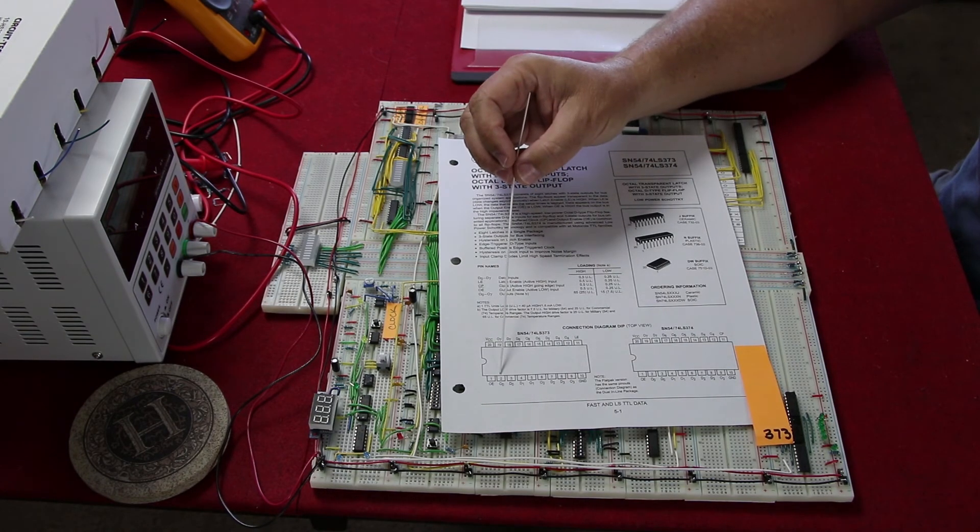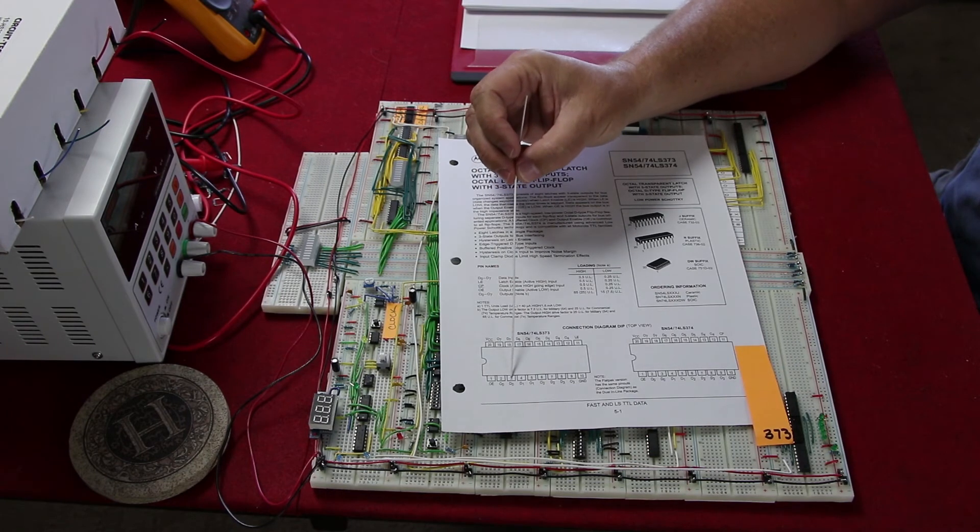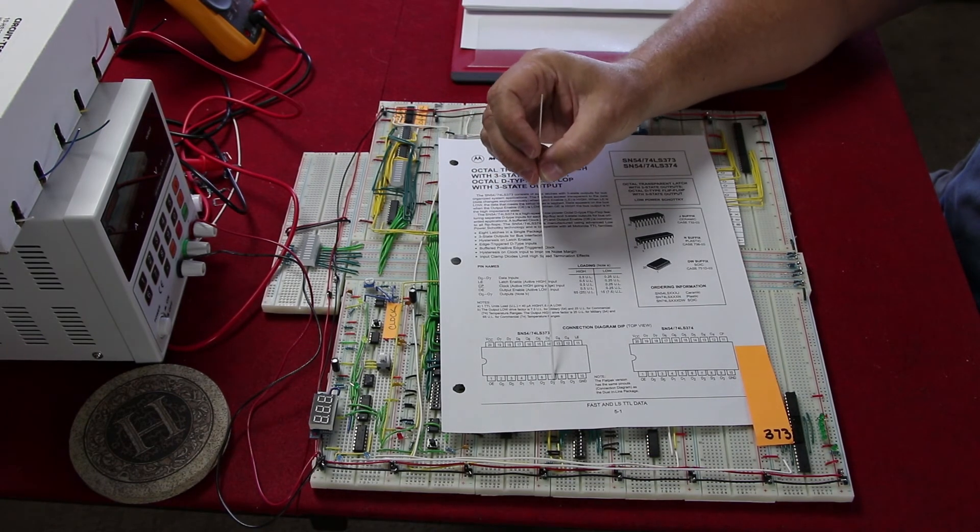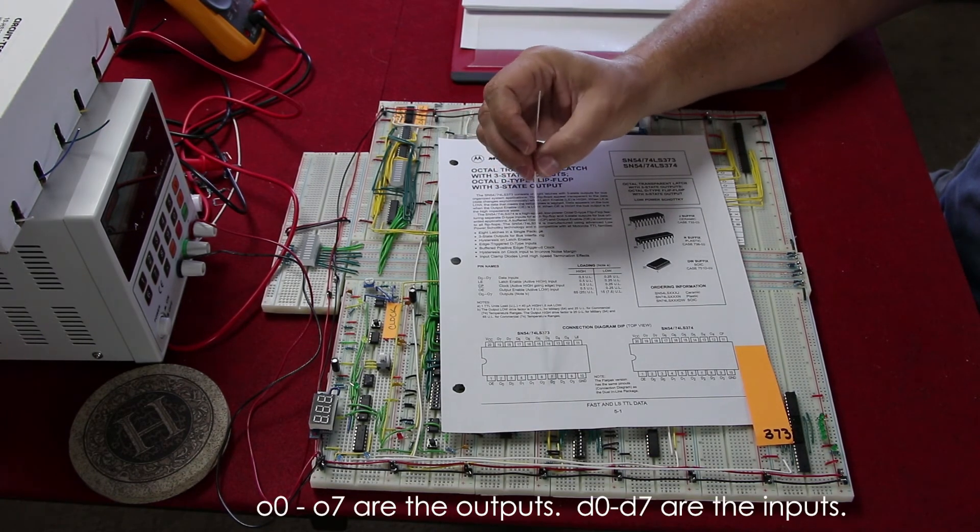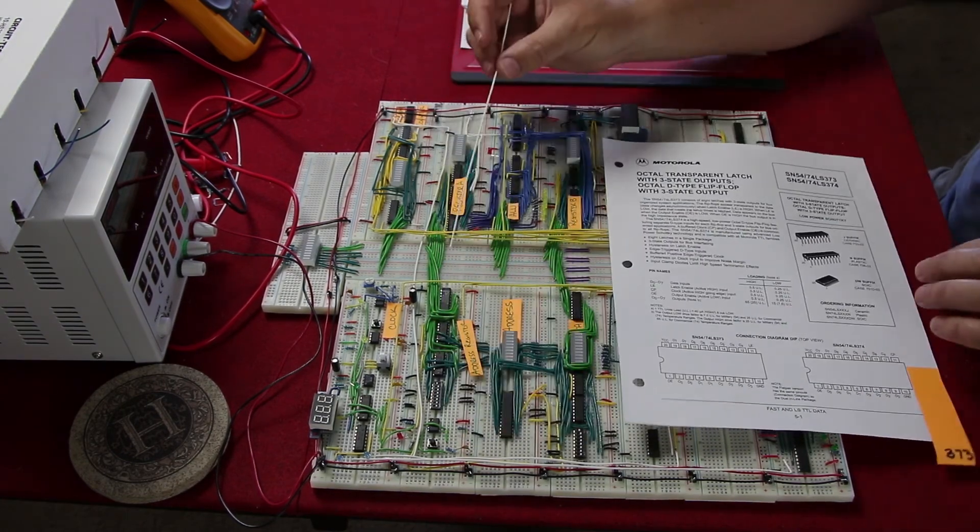You take and you send your data in via the outputs, you provide a latch enable that will then set them, you remove the latch enable, you can put your output enable low, and the information you just put in will come out of your D0 through D7 outputs. Kind of a neat chip, saves you from the dual chip register situation that you have here.